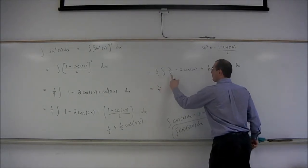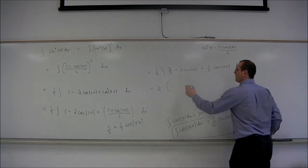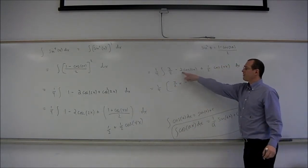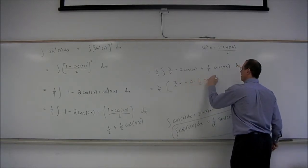So we have 1 fourth, the integral of 3 halves dx is 3 halves x. And then the integral of 2 cosine 2x is going to be 2 times 1 half sine 2x.